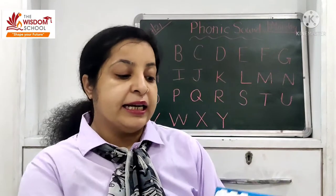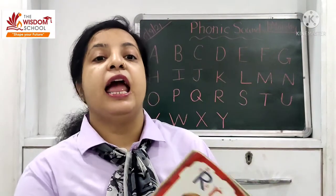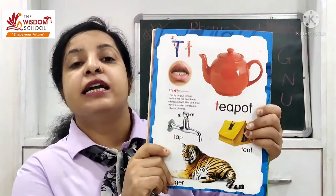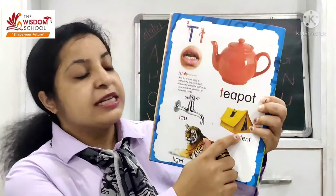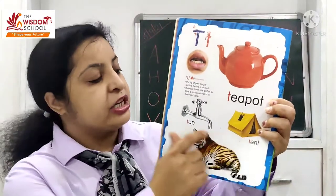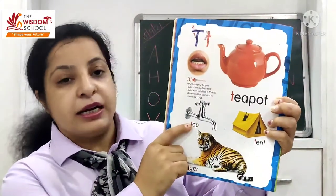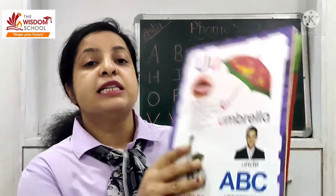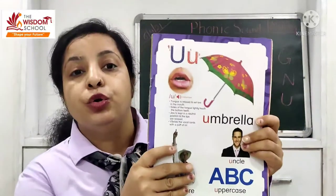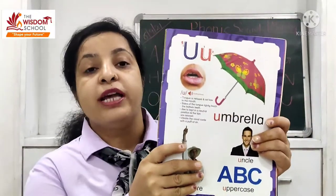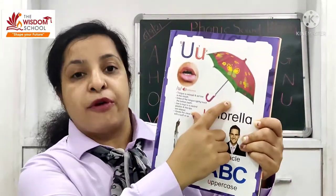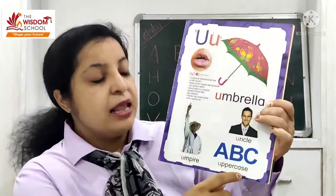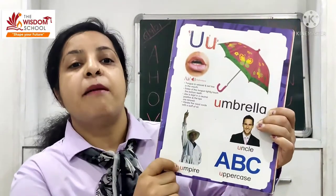Next letter is letter T. The sound of letter T is T. Words: Tiger. Next letter is letter U - sound is A. Words: Umbrella, Uncle, Uppercase, Umpire.